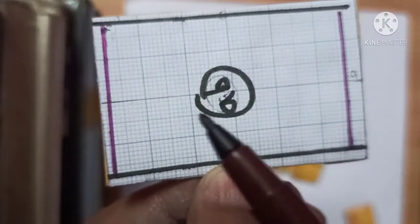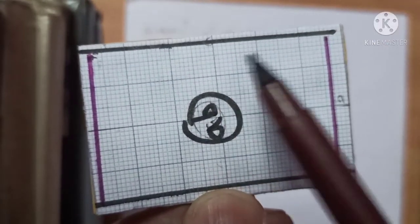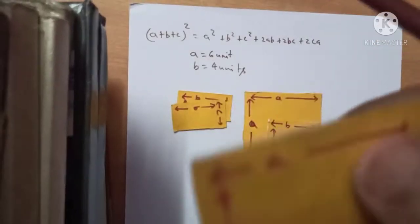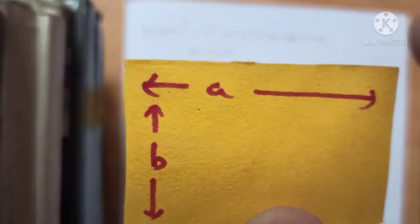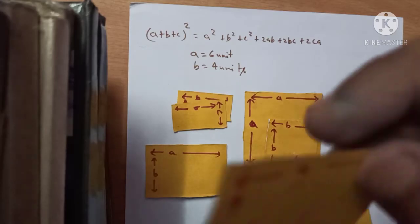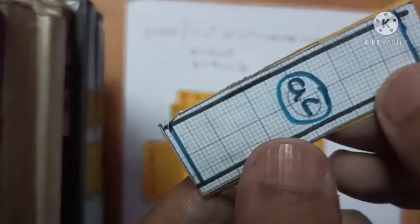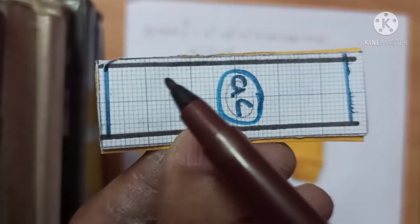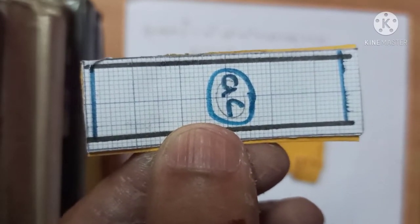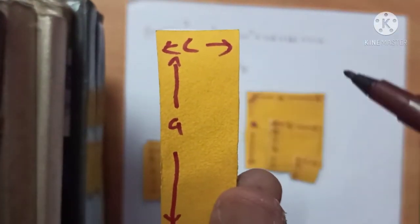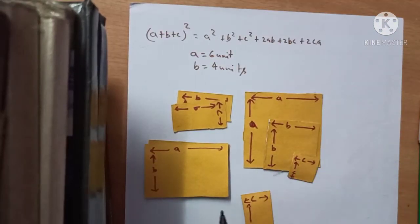Now I have taken a rectangle where the length is 6 units (that is a) and the breadth is 4 units — 1, 2, 3, 4 — so a into b. The area of this rectangular block will be ab. I have taken two such rectangular blocks. Similarly, I have taken the length as 6 units (that is a) and the breadth as 2 units (that is c), so the area is ac. I have taken two such ac blocks.